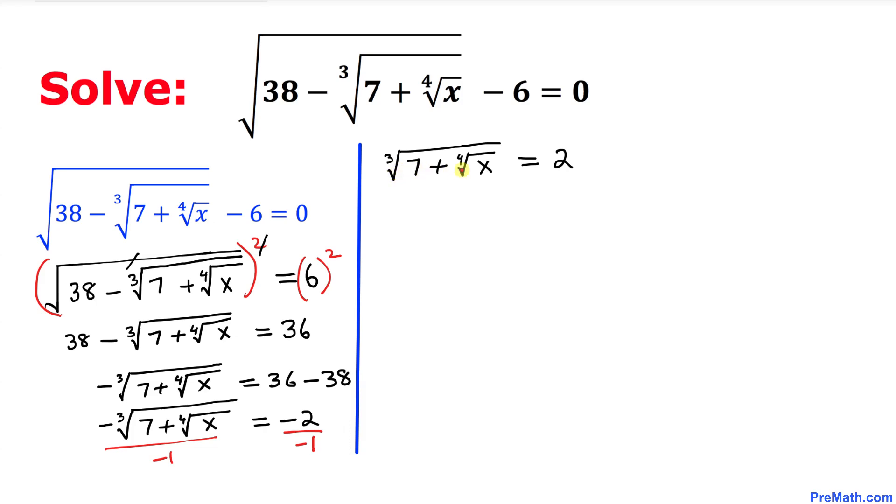So we got on the left hand side the cube root of 7 plus fourth root of x equal to 2. Now we want to undo this cube root, so therefore I am going to take the power 3 on both sides.